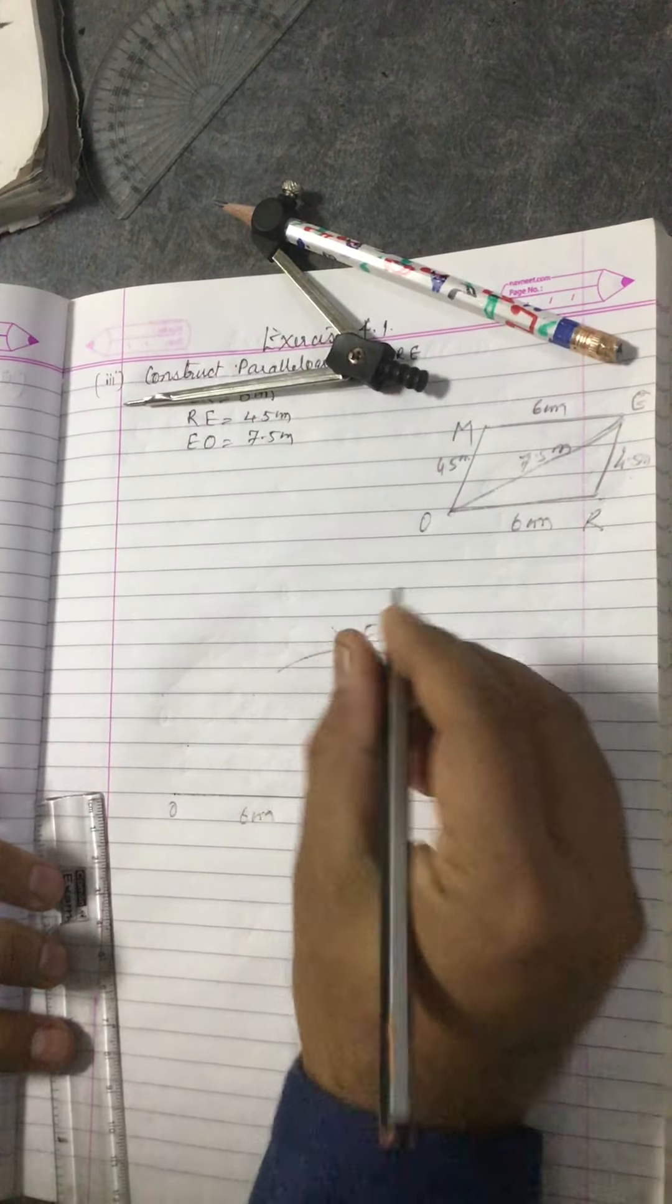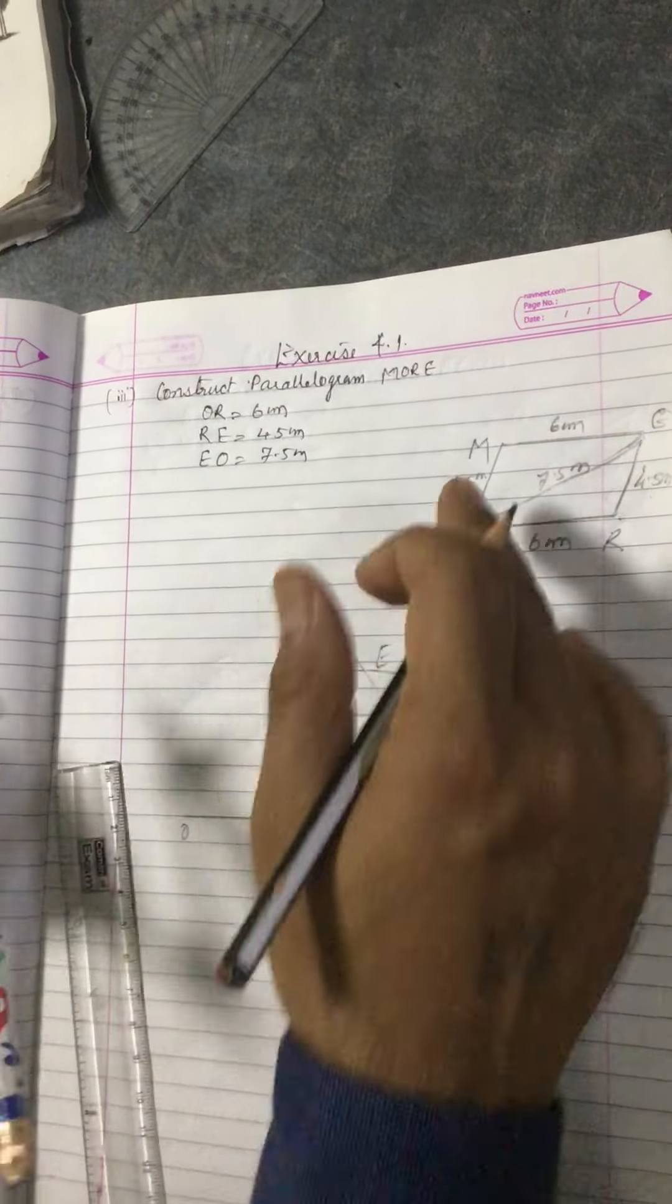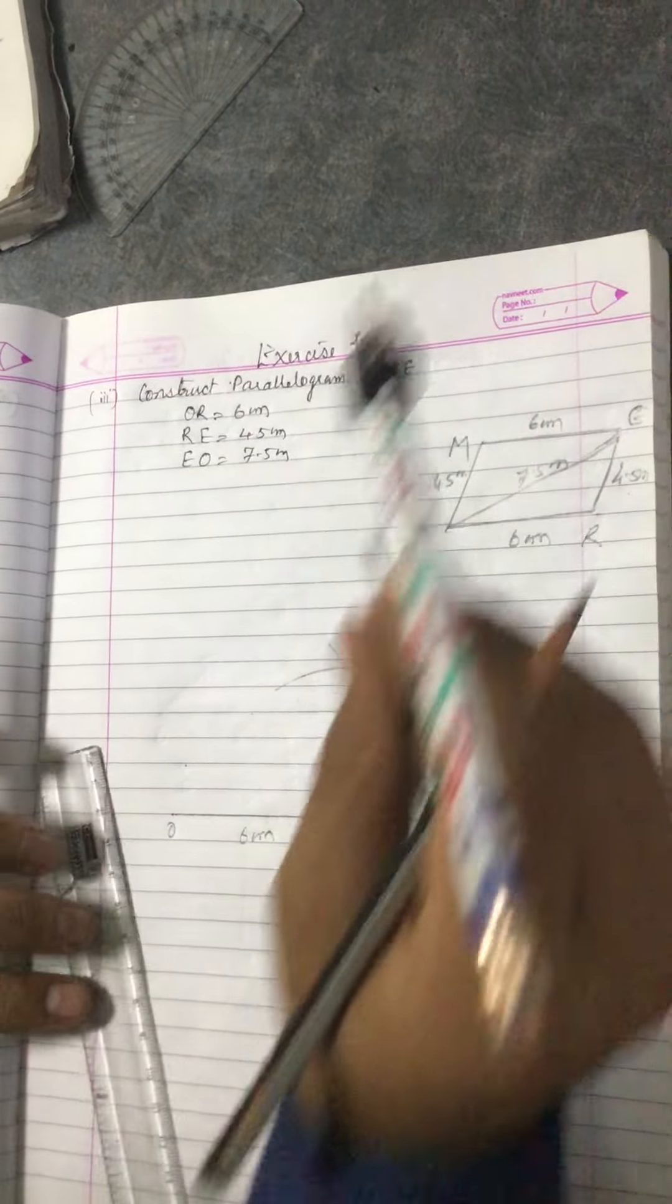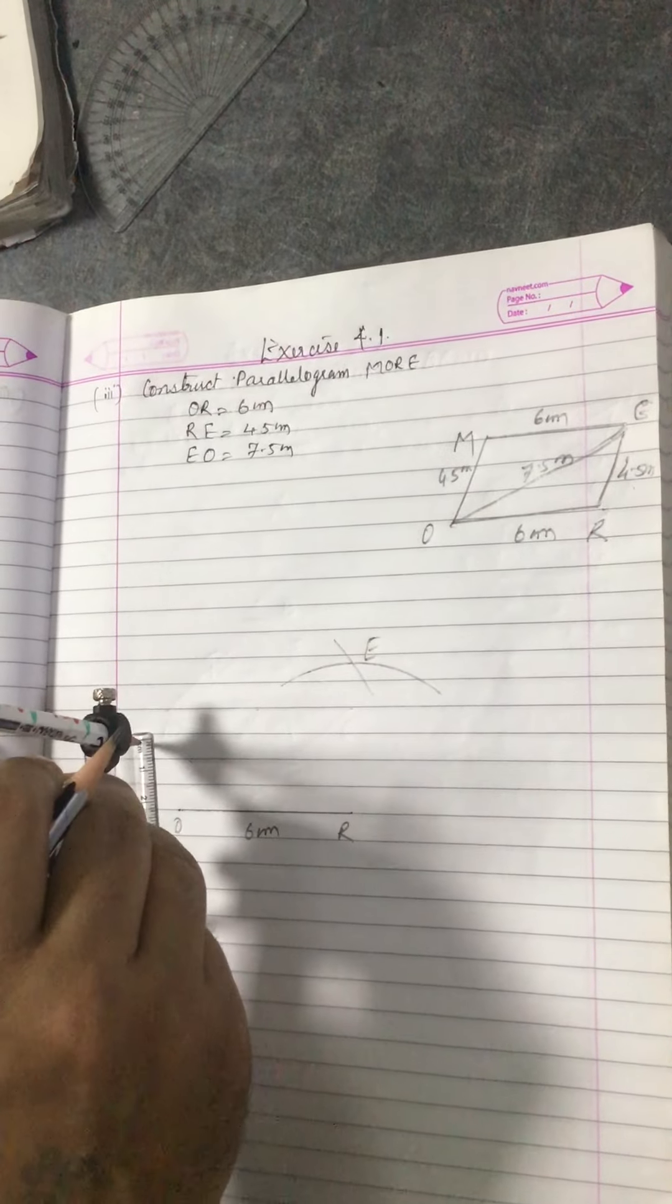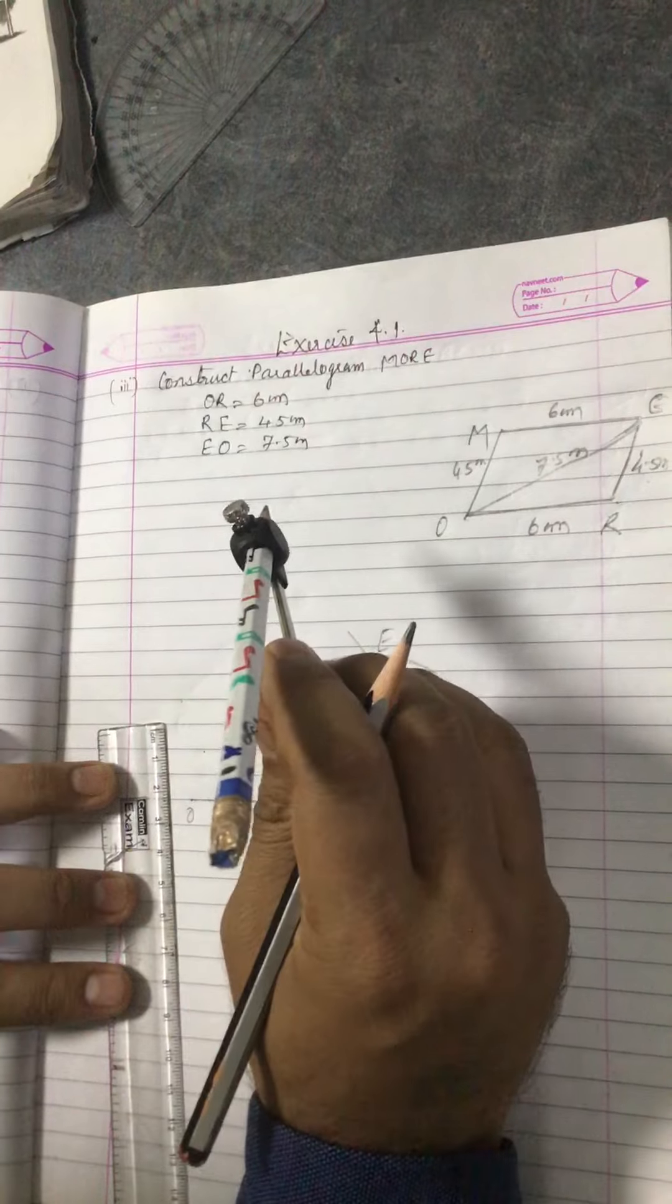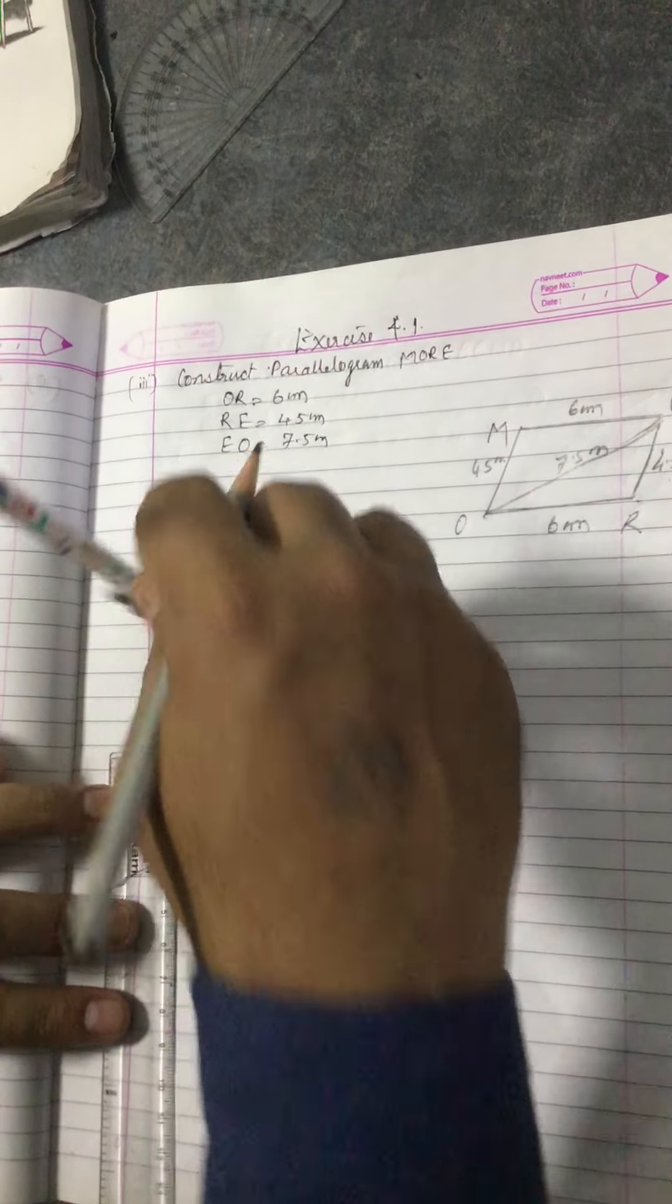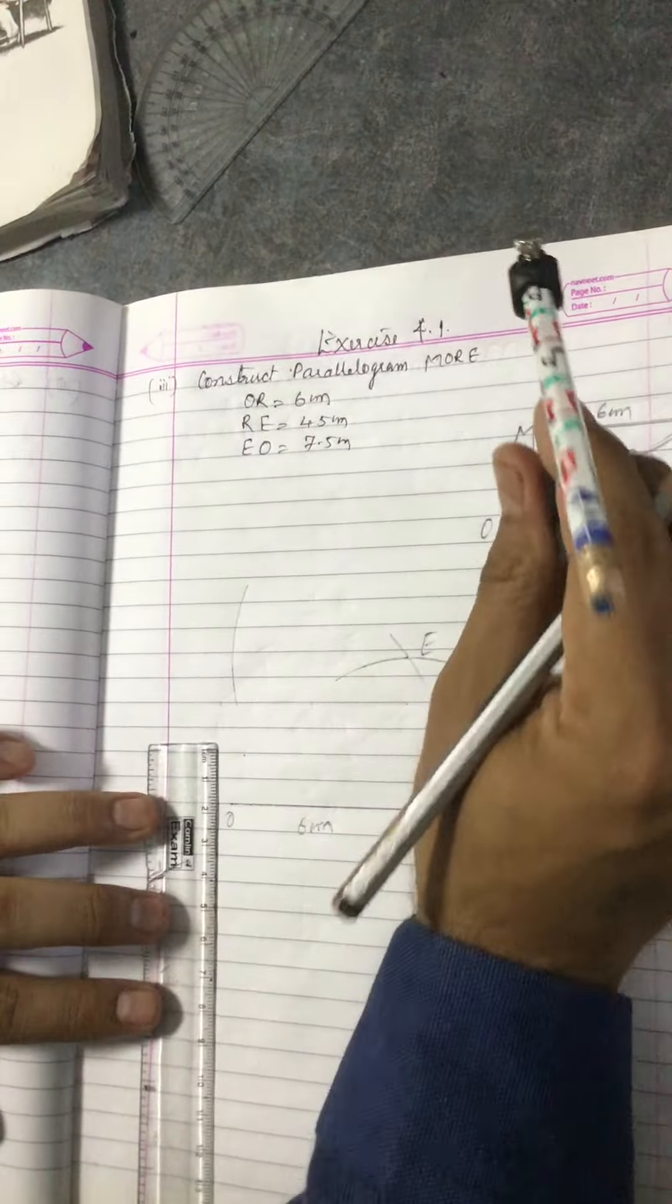Now again we want M point also. EM is given 6 centimeter, so you can draw an arc with E as center and radius 6 centimeter.